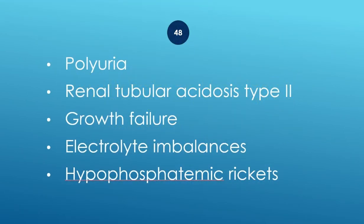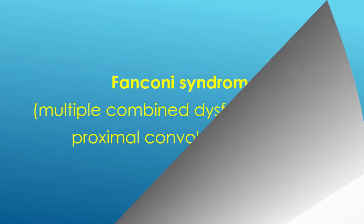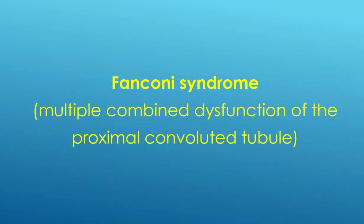Polyuria, renal tubular acidosis type 2, growth failure, electrolyte imbalances, and hypophosphatemic rickets — Fanconi syndrome: multiple combined dysfunction of the proximal convoluted tubule.